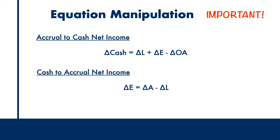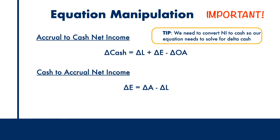Here's a quick little tip if you ever get confused over the two equations. Remember that when the question asks you to convert to cash net income, we need to solve for delta C. Hence, the rearrangement would be delta C equals delta L minus delta A. You get the idea.